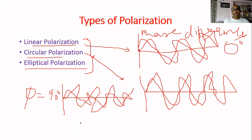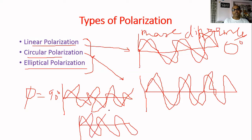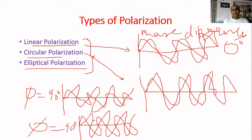Elliptical polarization will be similar to circular polarization, with a phase difference of 90 degrees, but the magnitude will not be equal — magnitude will be different. So that is linear polarization, circular polarization, and elliptical polarization. We will be utilizing these concepts further when we discuss about the polariscope.